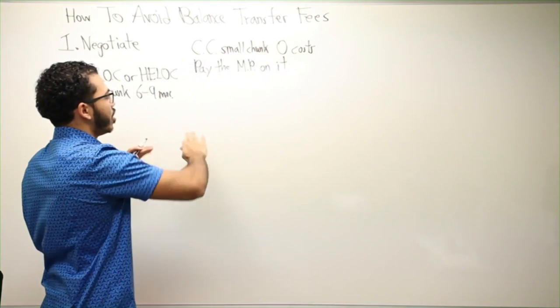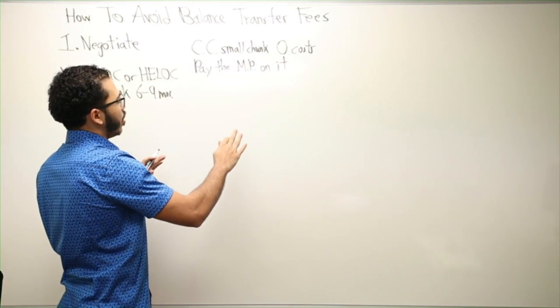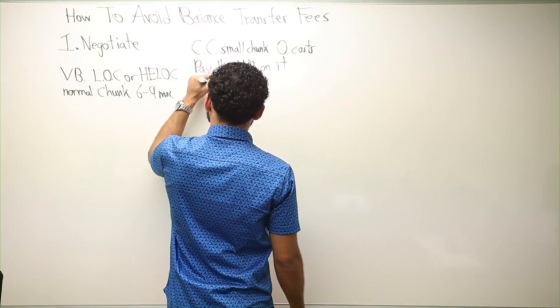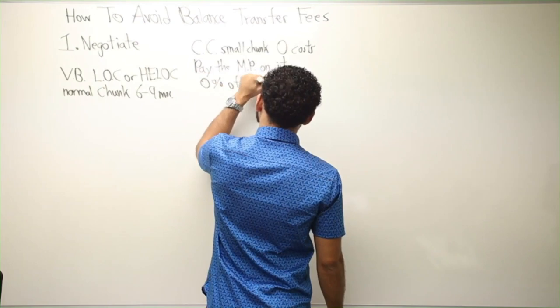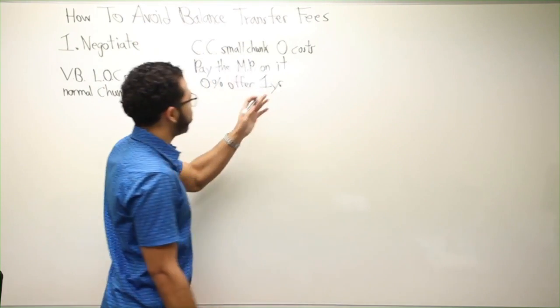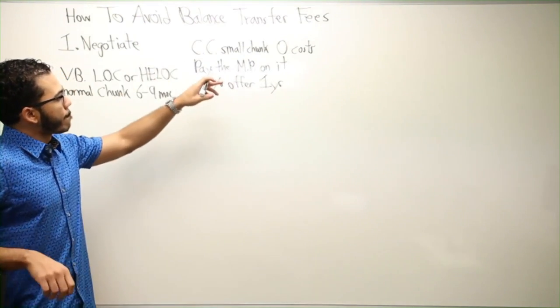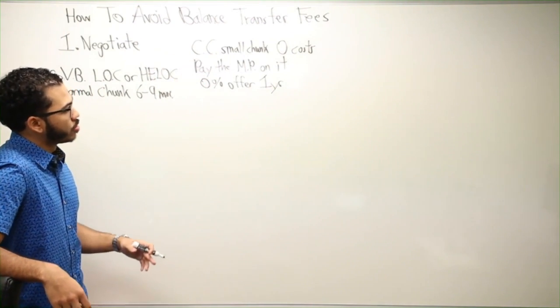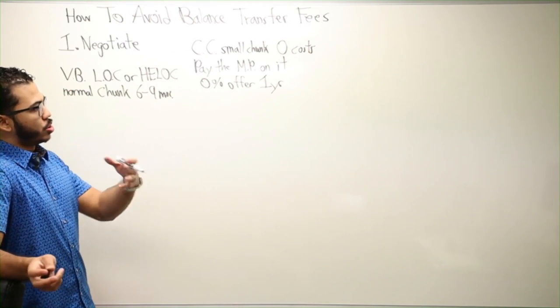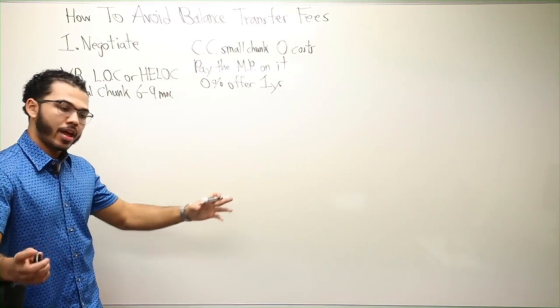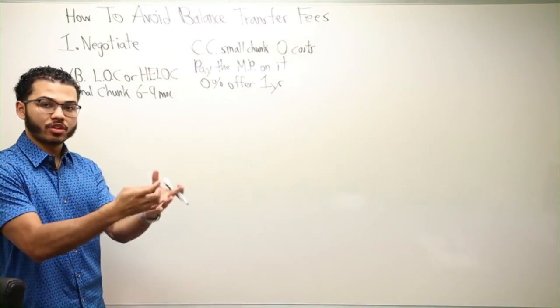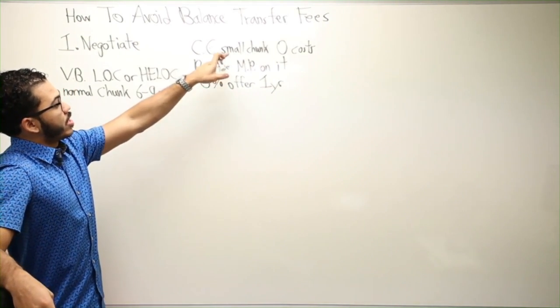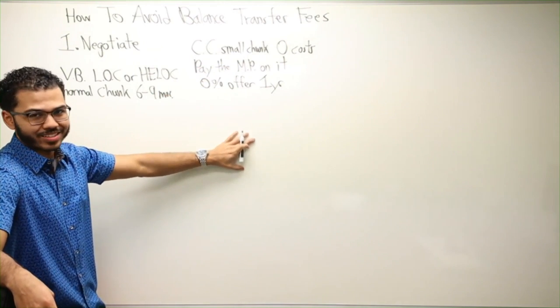Pay the monthly payment on it, zero cost, and then you have a zero percent offer for maybe one year. You know what you could do? Maybe because you're smart and you removed escrow from your mortgage and the insurance and all that, and you pay it for the year not by the month, maybe that small chunk could be the cost of your taxes per year.